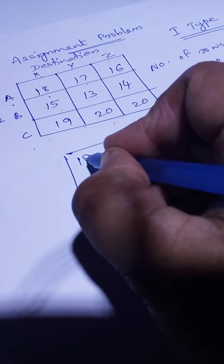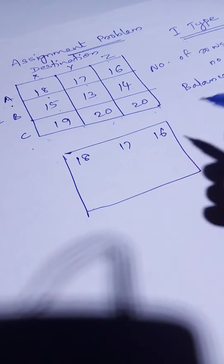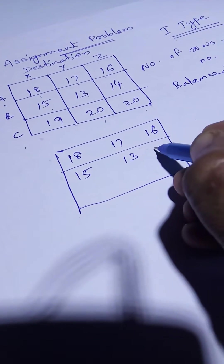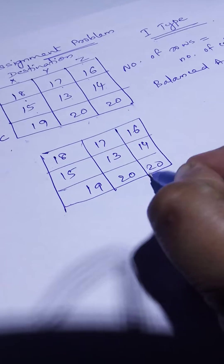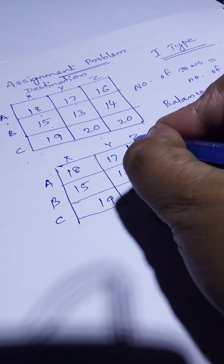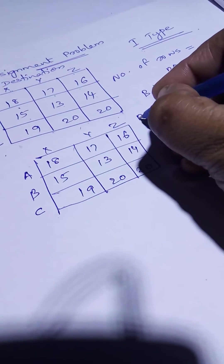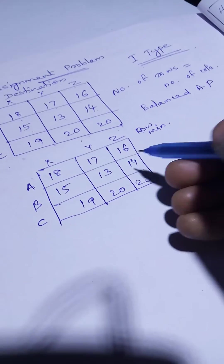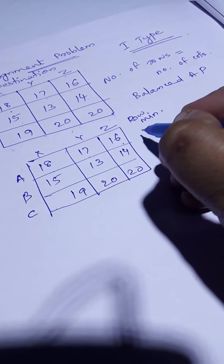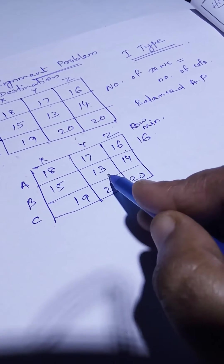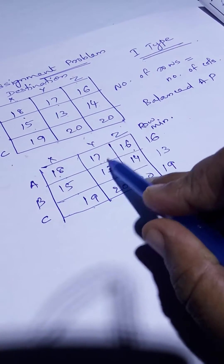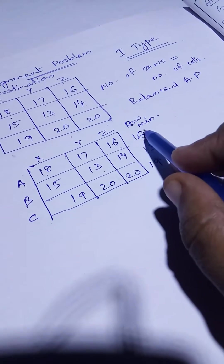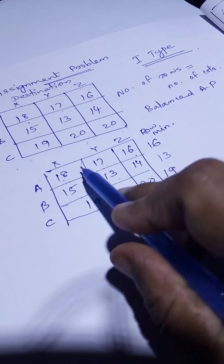For the solution, find the row minimum. Writing the same matrix again: 18, 17, 16 / 15, 13, 14 / 19, 20, 20 — with rows ABC and columns XYZ. Row minimum for row A: the minimum of 18, 17, 16 is 16. For row B: minimum of 15, 13, 14 is 13. For row C: minimum of 19, 20, 20 is 19. Now find the differences: 18−16, 17−16, 16−16 — each row minimum is subtracted from that particular row.